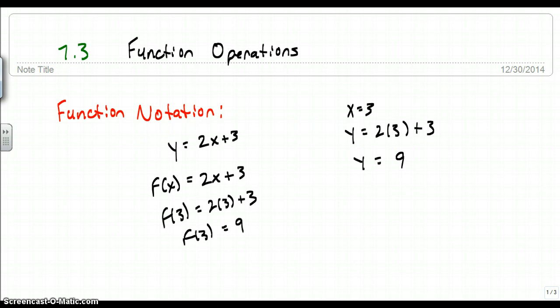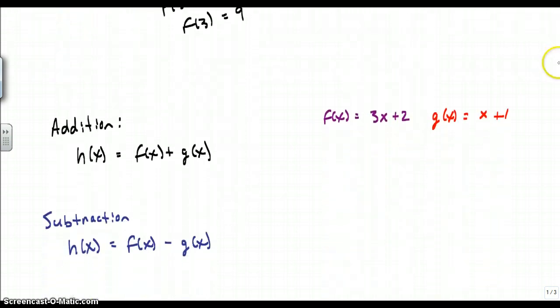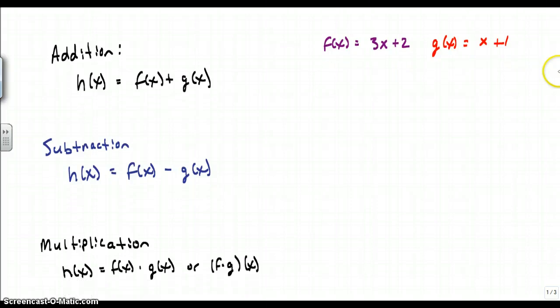We're going to be using function notation when we talk about these operations. Throughout each one of these examples, we're going to use the same two functions: f of x equals 3x plus 2, and g of x equals x plus 1. The g of x is just another function — just another way to label a function. I can use any variable: h, f, g, a, b — it doesn't matter. I'm just defining g of x as another function.